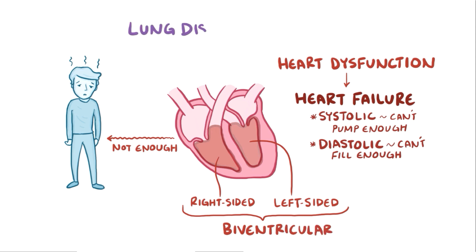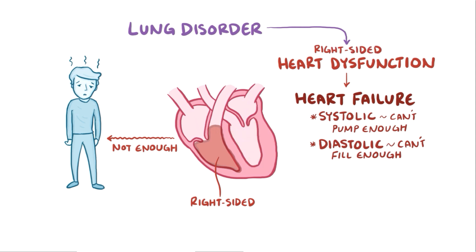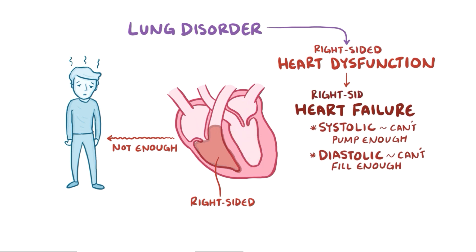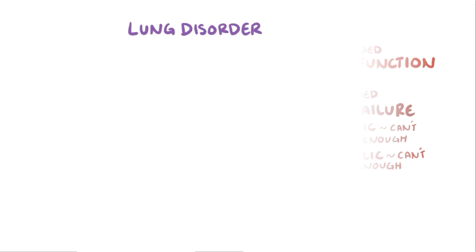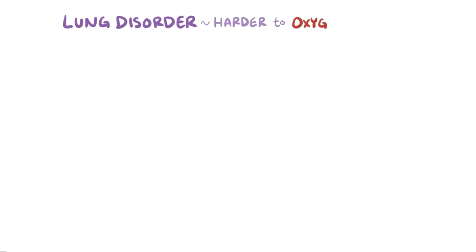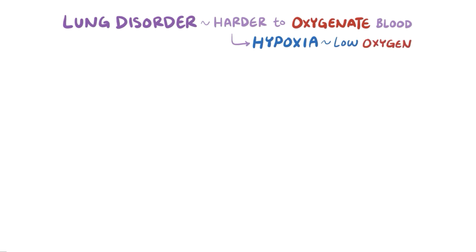Cor pulmonale is when a lung disorder causes right-sided heart dysfunction and can develop into right-sided heart failure. Lung disorders make it harder to oxygenate the blood, which can lead to hypoxia, or low oxygen levels. In response, this triggers a process called hypoxic pulmonary vasoconstriction.